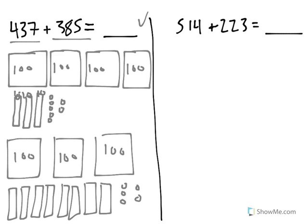Now in order to find out how many we have total, let's go ahead and start by counting the hundreds. We have 1, 2, 3, 4, 5, 6, 7. There are 700s so far.